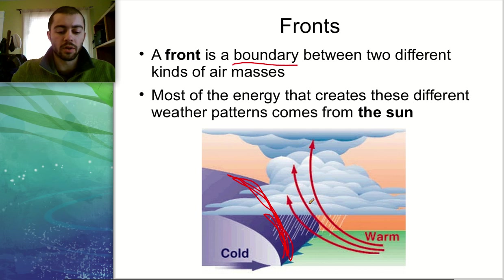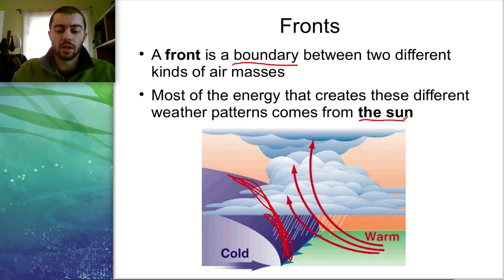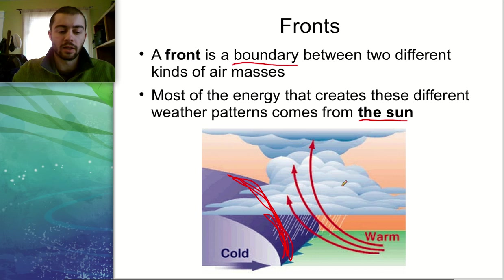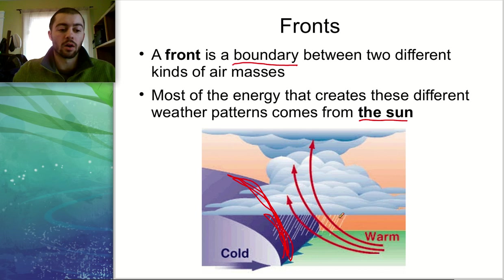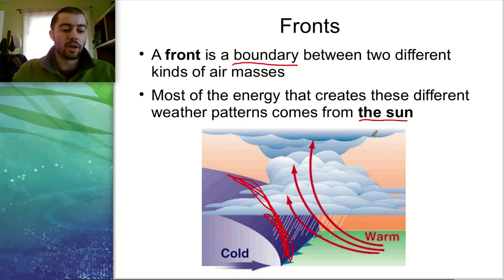It's also important to know how we end up with these different types of air masses, fronts, and weather patterns. All this energy is basically coming from the sun. As the sun heats the earth, it heats it unevenly — certain parts get more direct sunlight than others, creating warmer air masses in some places and colder air masses in others. So the majority of the energy driving different weather patterns is coming directly from the sun.